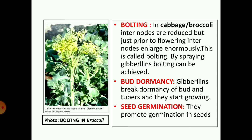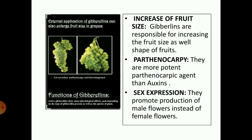Bud dormancy: dormancy is a period of rest — seeds, buds, and tubers go into a period of rest known as dormancy. Gibberellins break dormancy of buds and tubers. Seed germination: they promote germination in seeds. Increase in fruit size: gibberellins are responsible for increasing the size and even the shape of the fruit. Parthenocarpy: they are more potent parthenocarpic agents than auxins. Sex expression: they promote production of male flowers instead of female flowers — whereas auxin increases female flowers, spraying gibberellins increases male flowers.